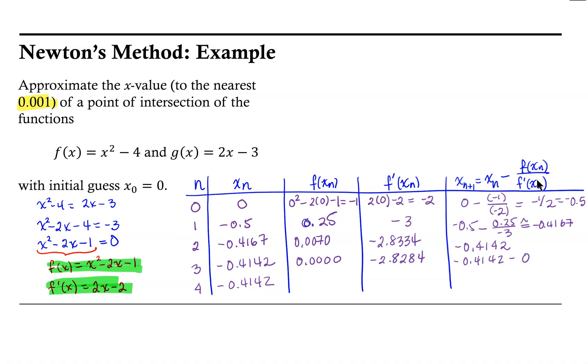So notice that now our two successive iterations produce the same value, and it is thus accurate to the indicated precision. So we would end up saying that the x-value of the point of intersection is approximately -0.4142.